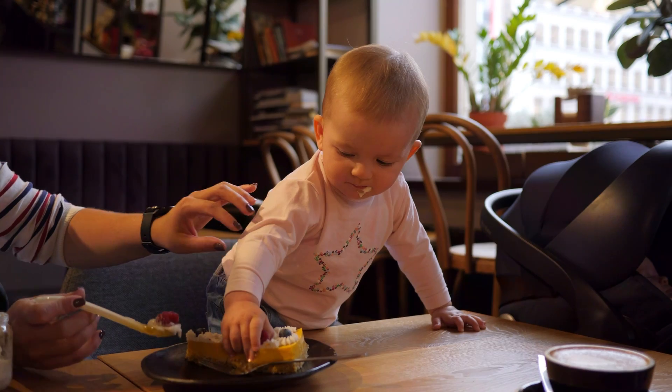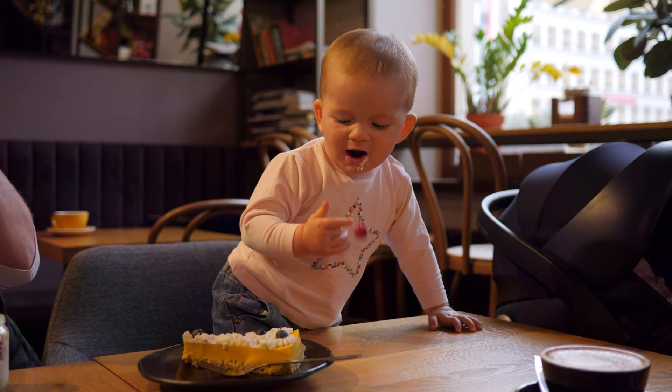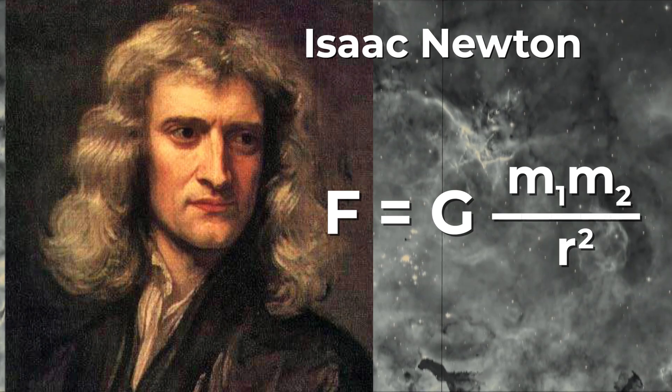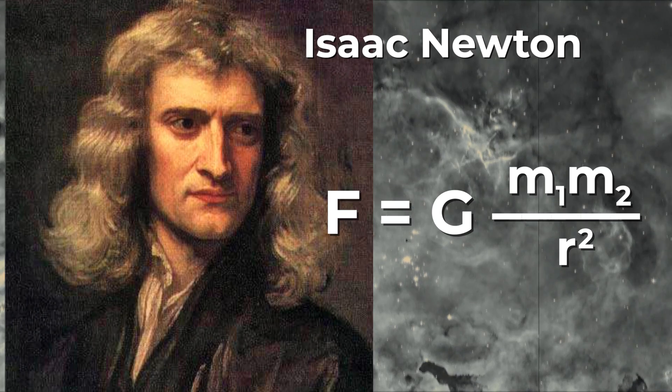Gravity is the most familiar of the forces. We encounter it as young children, and we learn to feed ourselves — sometimes without success. It was in the 1670s when Sir Isaac Newton devised his theory of universal gravity. In his theory, the force between any two objects depends on the mass of each of the two objects and the distance between them. He even invented a simple equation that quantified his ideas.